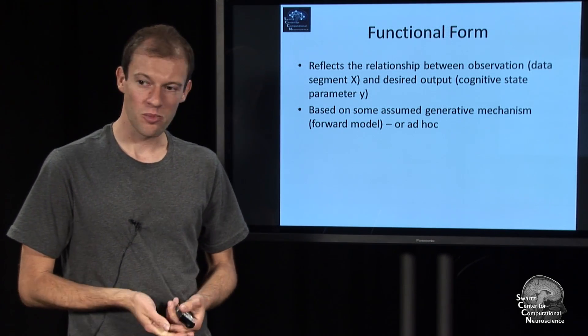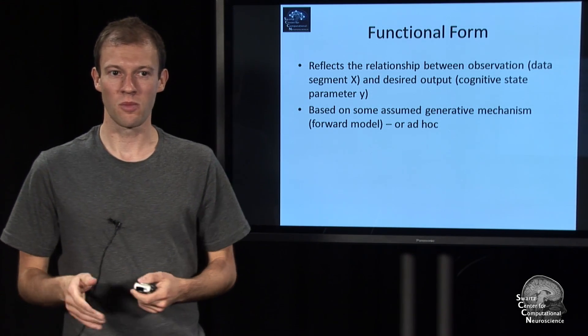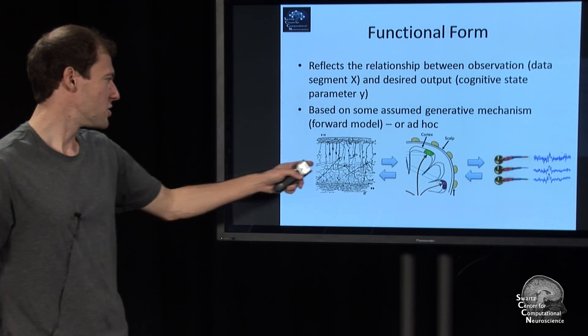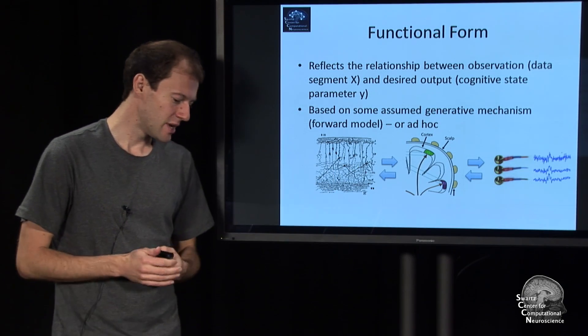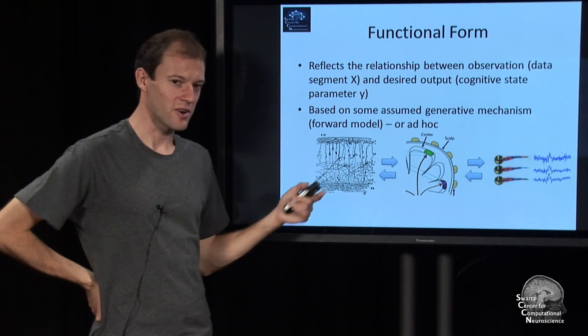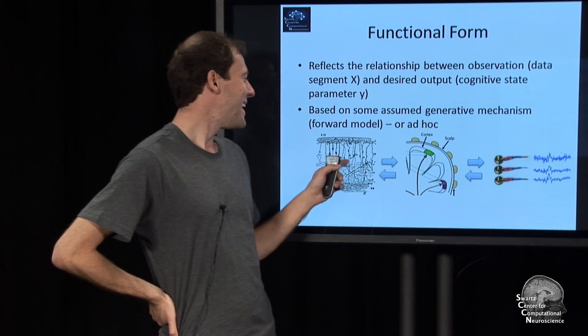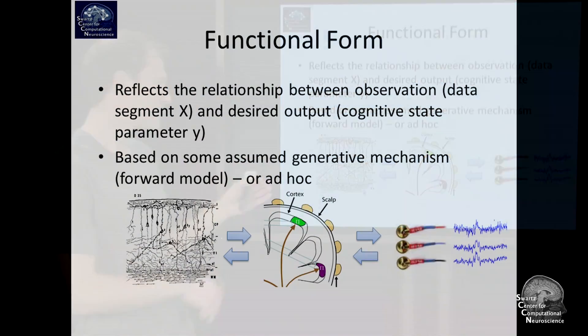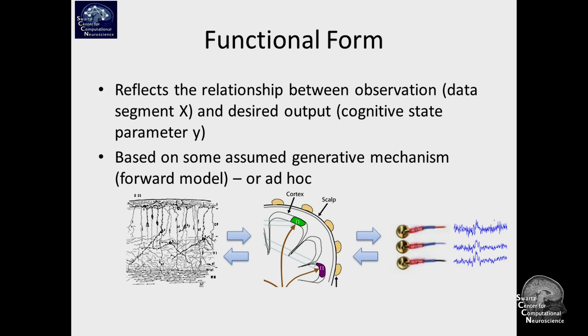You can be very principled and say there is a so-called forward model, such as there is some mechanism in neurons that relates to what I care about. If you have enough neurons in a large enough patch of cortex, it generates an electromagnetic field that is strong enough to rise above the noise floor at your sensors. There's electromagnetic relationships here, and that gives rise to the sensor signals that you observe plus whatever noise the sensor picks up. That would be an example forward model.